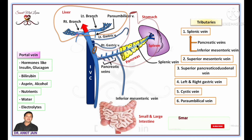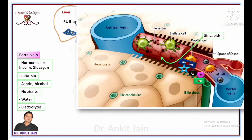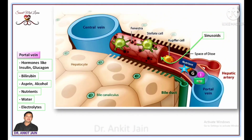In the liver, the portal vein divides and re-divides into minor branches, and ultimately these branches drain into liver sinusoids. These liver sinusoids are drained into liver cells known as hepatocytes, which utilize these essential substances in various metabolic activities like protein synthesis, glycogenesis, lipogenesis, and more.